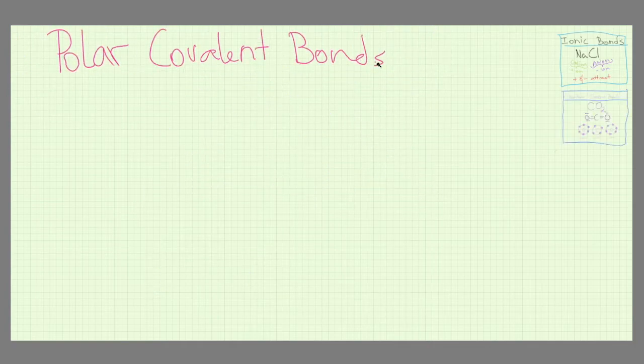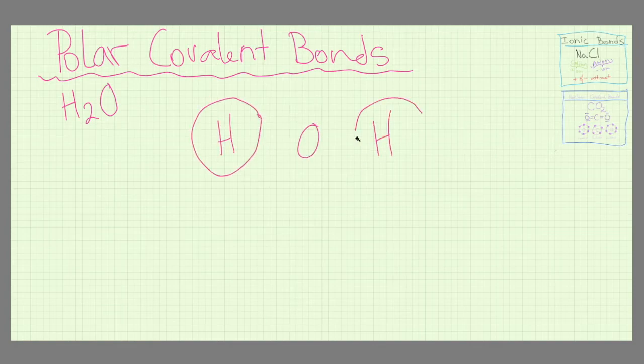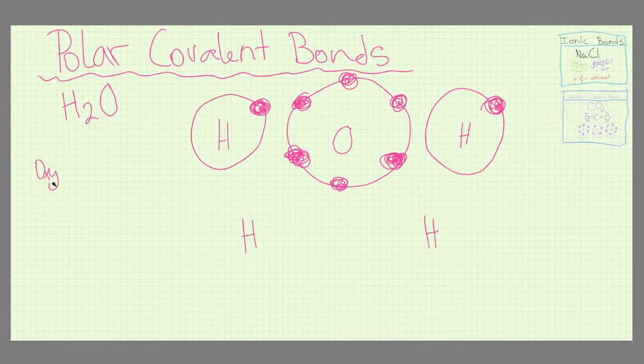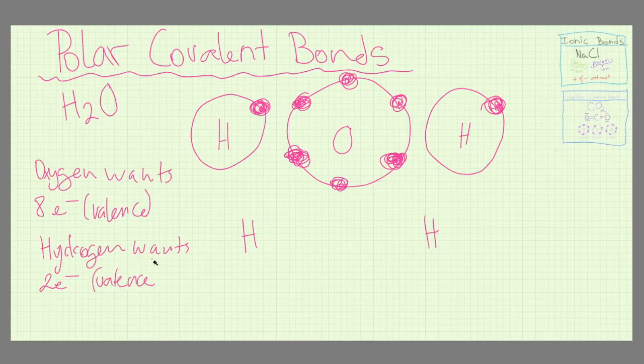Now for a polar covalent bond, we have water H2O. Here an oxygen is bonding with two hydrogens. We go through a similar process as we did with the non-polar bond and end up with an appropriate arrangement of electrons.